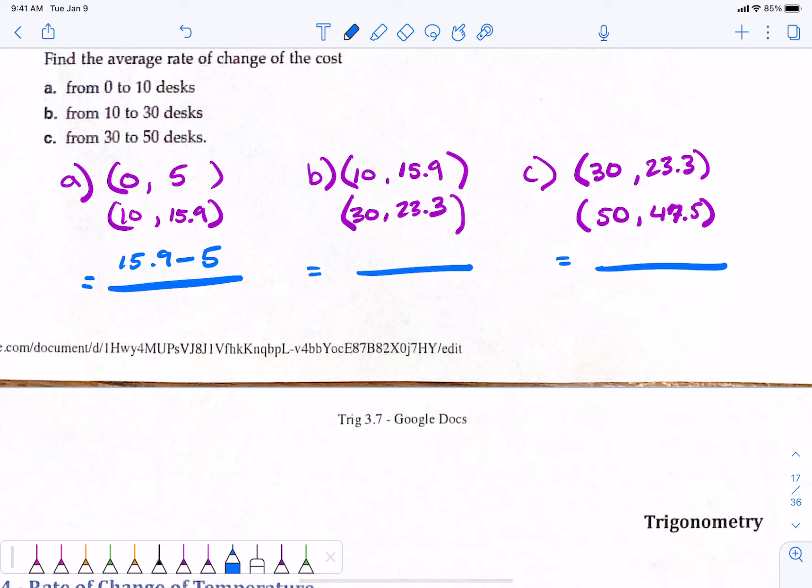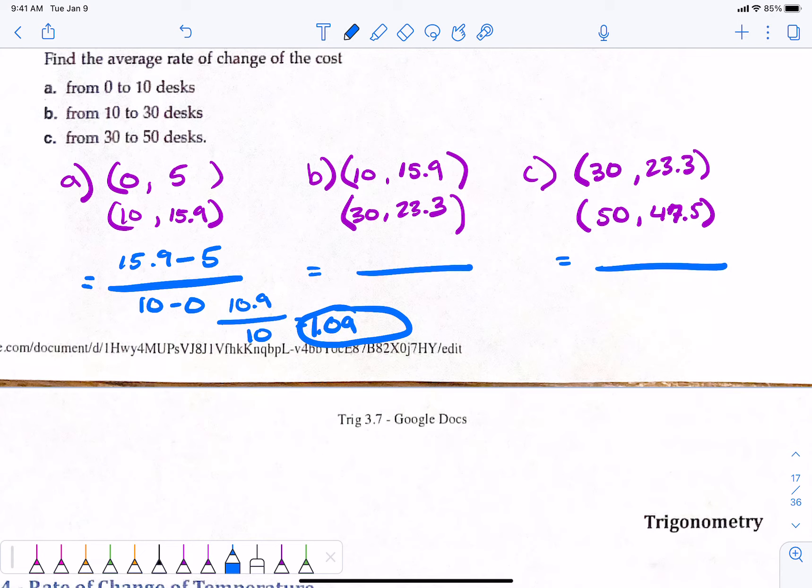15.9 minus 5, 10 minus 0. 10 is your bottom number. 10.9. 10.9 divided by 10. You moved the decimal. 1.09. And that is what? What are our units? What was the 15.9 and the 5? Dollars per desk. And actually, it's not 1.09, technically. These are in thousands of dollars. So it's really $1,090. 10.90 per desk. That's the cost.